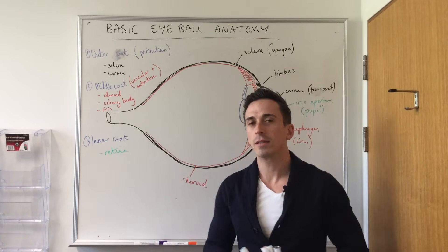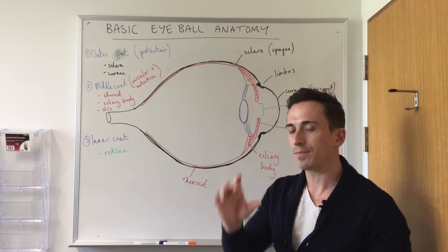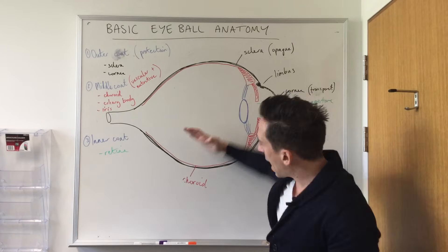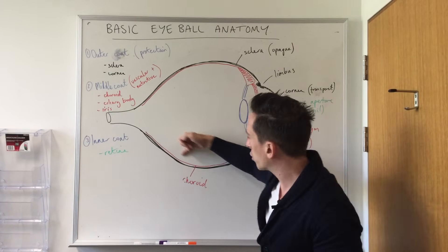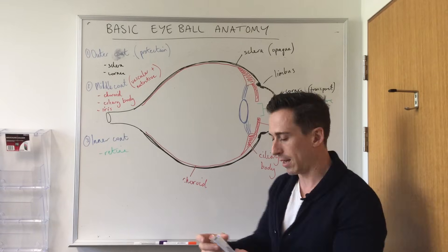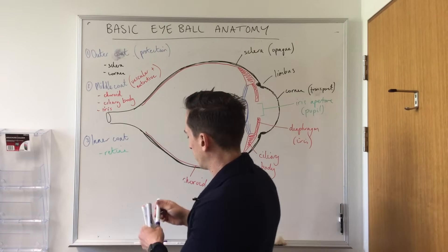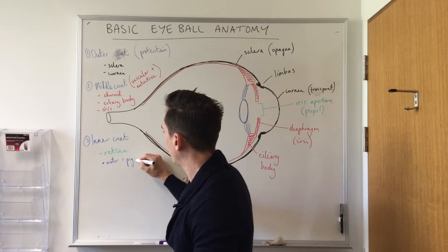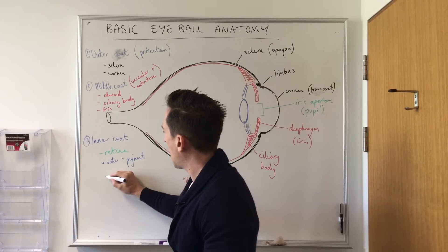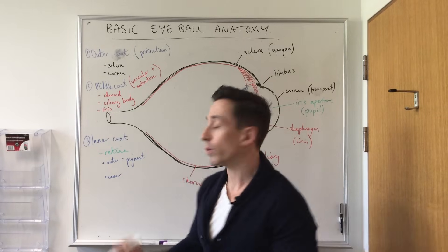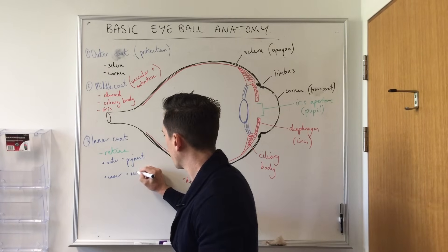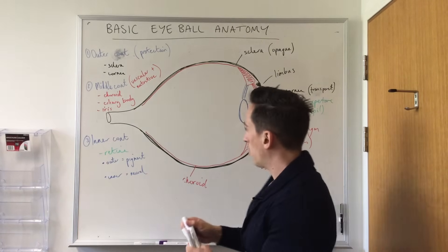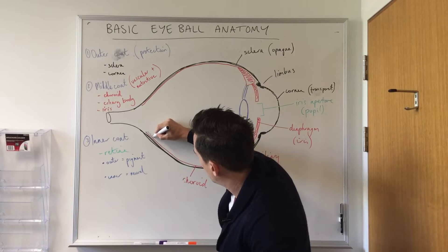The retina is made up of many layers, but I'll refer to two main ones: an outer layer and an inner layer. The outermost layer, which is closest to the choroid, is called the pigment layer. The inner layer is called the neural layer.